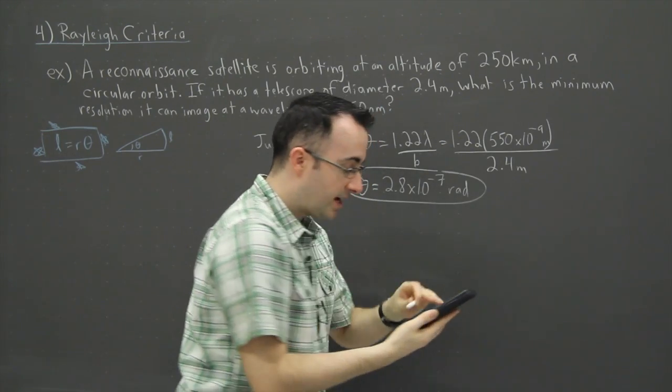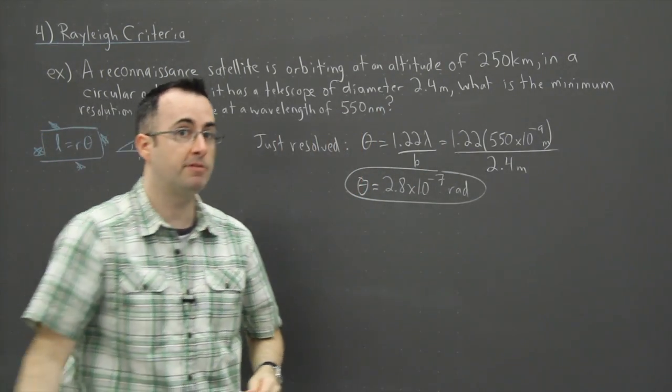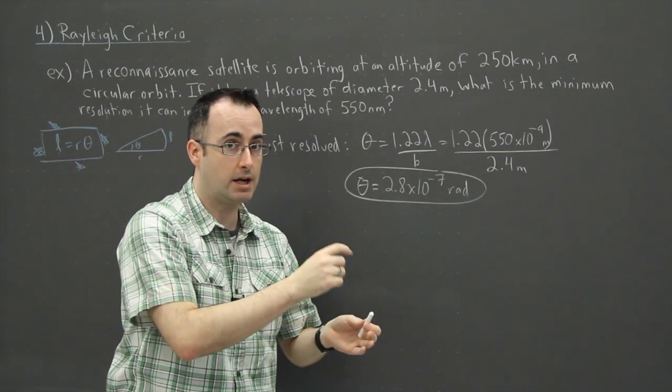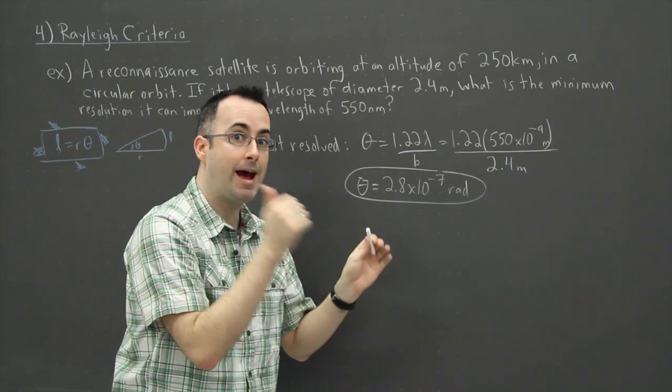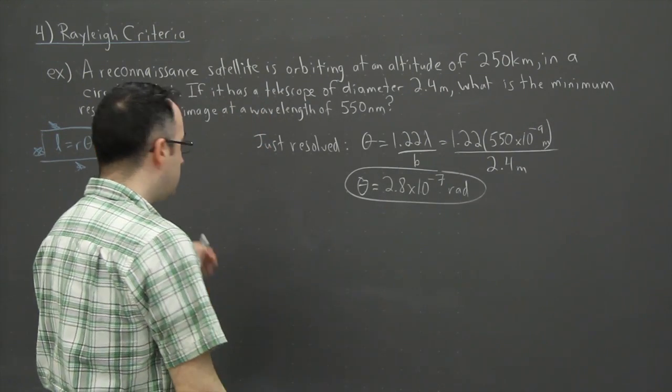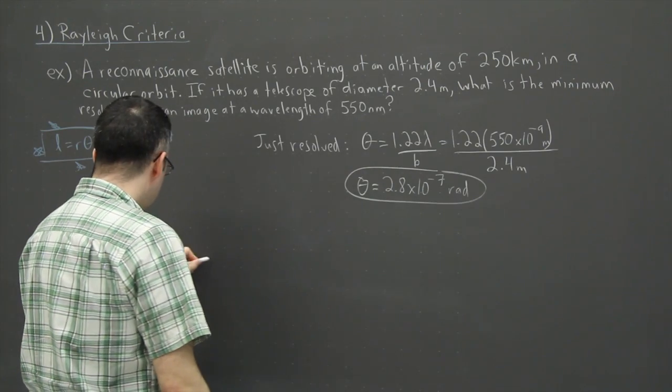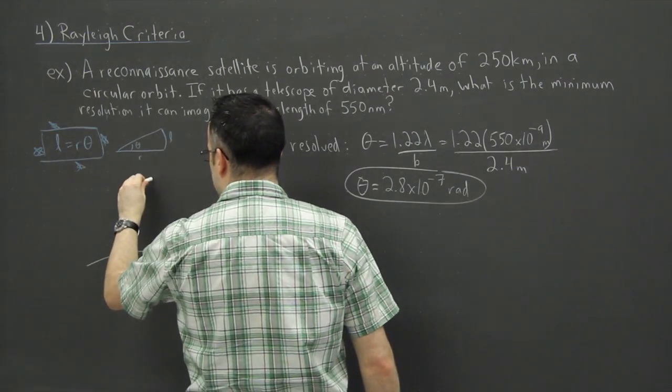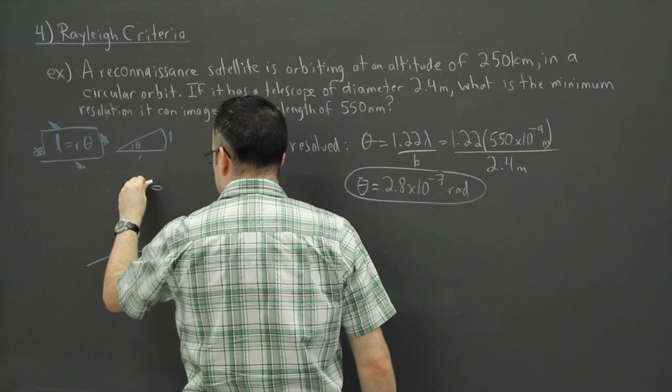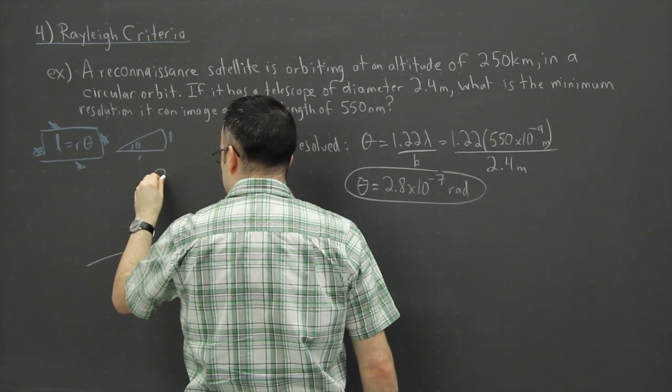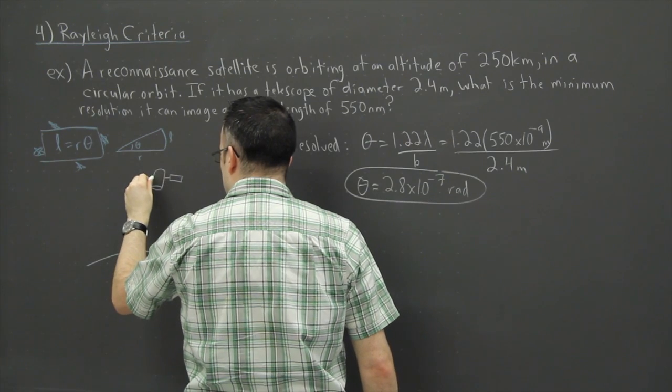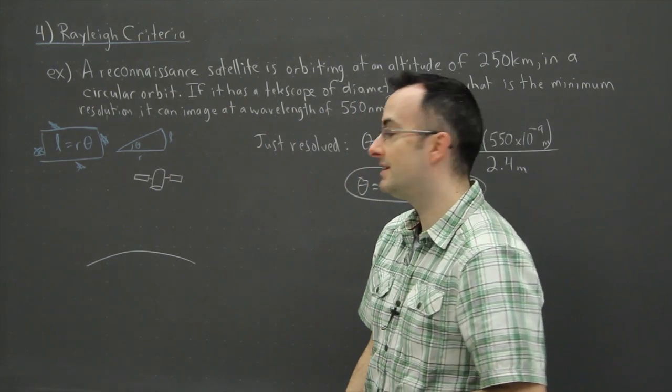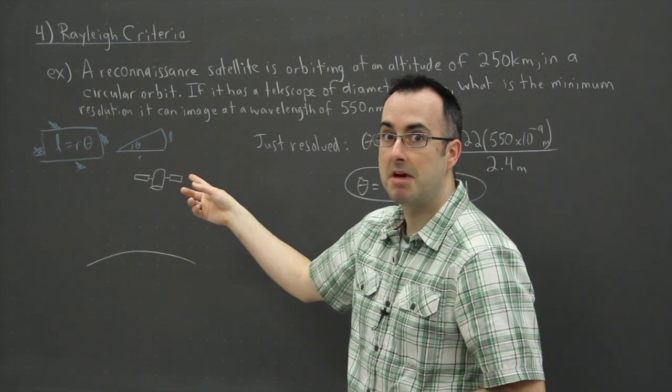So that tells me what I can just resolve. If you remember from Rayleigh criteria, what it means is, this or anything smaller than that, I can't tell apart. But this or anything bigger than that, I can tell apart. So the idea here, what's actually happening is I've got the ground over here. Let's say that's the ground. And I've got my satellite. So maybe it's got a circular telescope piece. And it's probably got little solar panels.